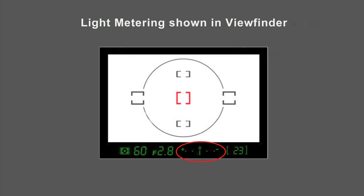Your goal is to get this indicator as close to zero as possible. If your meter leans towards the minus, it means there is not enough light. You will have 3 options to let more light in: either open the aperture, slow down your shutter speed, or set a higher ISO. If your meter is leaning towards the plus, there is too much light, and you will have 3 options: close down your aperture, make your shutter speed faster, or set a smaller ISO if possible.